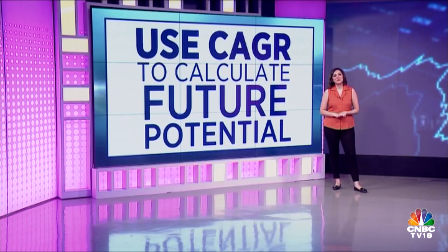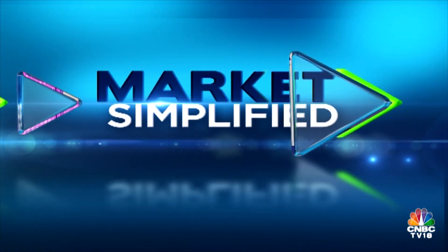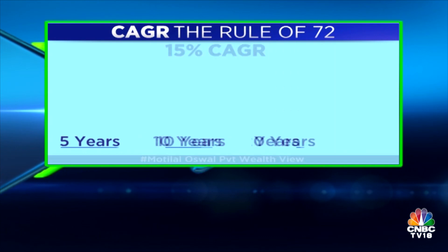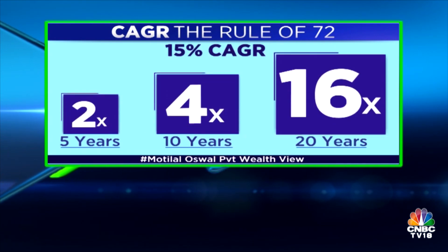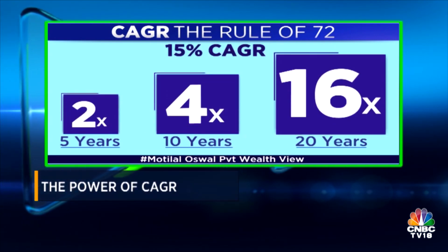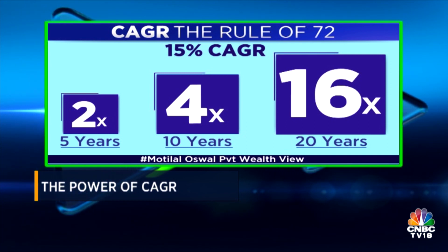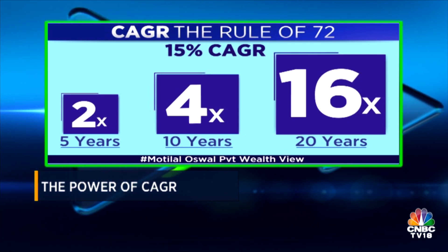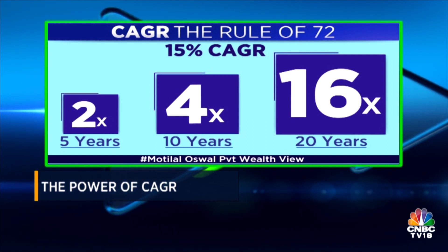Ashish Shankar of Motilal Oswal Private Wealth Management gives us this easy rule of thumb. The Rule of 72 tells you how much time it takes to double your investment. For example, if your returns are 15% compounded — that is CAGR, Compounded Annual Growth Rate — then an investment will take five years to double.